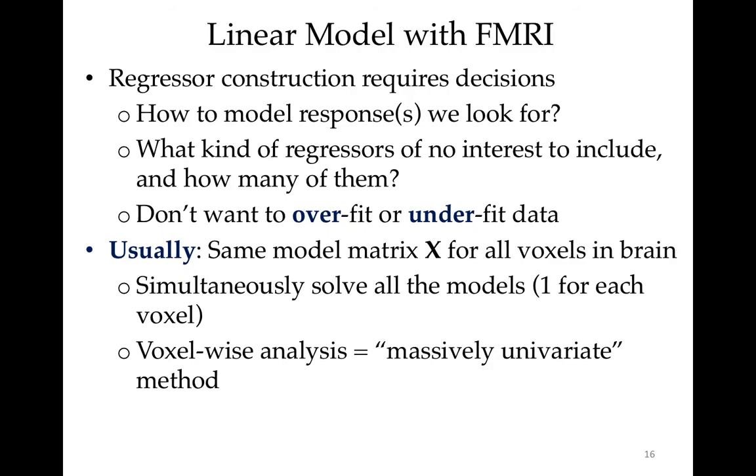Regressor construction requires decisions. There are no perfect ways to do this because we don't really know what the exact right connection between neural activity and blood response and followed by the MRI signal is. This combination of things is very complicated. So we have to make decisions on how we're going to model the shape of the responses we're looking for. We have to decide those are the regressors of interest. What are the regressors of no interest? How many of them do we want? We don't want to overfit the data by having too many regressors, and we don't want to underfit the data by having too few. People always ask, what's the best thing to do? There is no best thing to do. There are good things to do, there are reasonable things to do, and there are wrong things to do, but there's not a best thing to do. We don't have any way of judging.